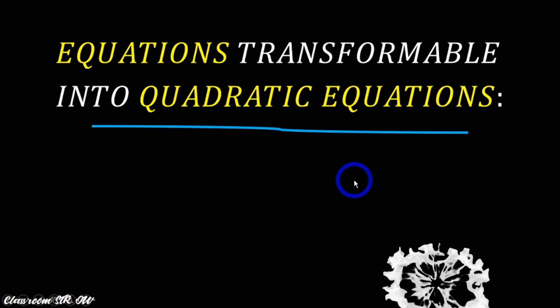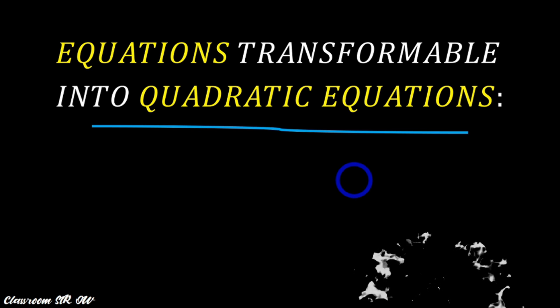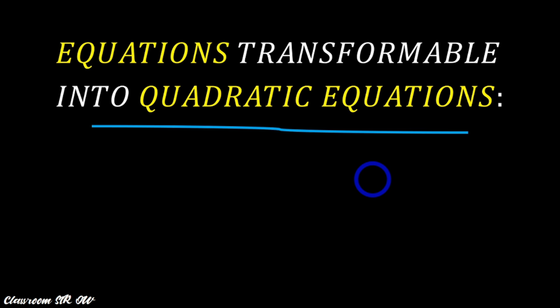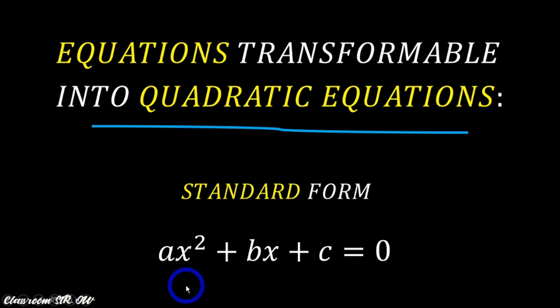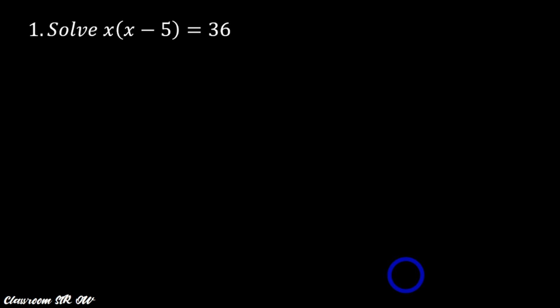So in this topic, this would somehow test your knowledge on the different mathematical concepts and principles that we have studied or discussed in the previous sessions. So another thing that we are going to remember in this topic is the standard form of the quadratic equation: ax squared plus bx plus c equals zero. We have to remember that all equations should be written in the standard form of the quadratic equation for us to solve or find the roots or solutions of our equations. So let us now begin with example number one.